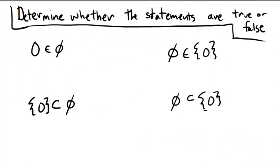We are going to determine whether the following set theoretic statements are either true or false. I have a bunch of statements here involving set theory and some of our notations, the null set, and the number zero. The first one on the top left says zero is an element of the empty set.